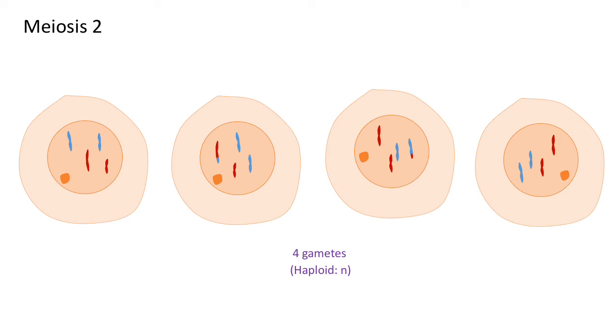A really important feature of these gametes is that they're genetically different from that parent cell and from each other as a consequence of independent segregation and crossing over. But remember that crossing over is a rare event, so it only happens very occasionally. Not all of the chromosomes will have undergone crossing over.